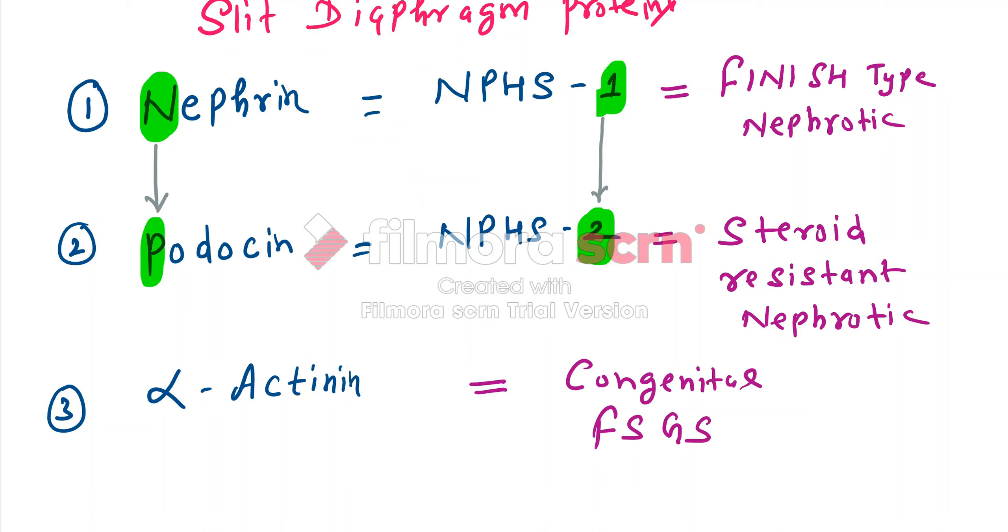What is first? F for first. F for Finnish type. So NPHS1 will lead to Finnish type.